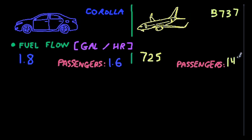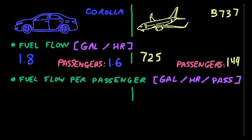Therefore, the comparison would be more fair if we considered the fuel flow per passenger instead, which is the quantity of fuel per hour that a car or plane needs to carry one passenger. For the car, we have 1.8 gallons per hour divided by 1.6 passengers, which makes 1.1 gallons per hour per passenger.